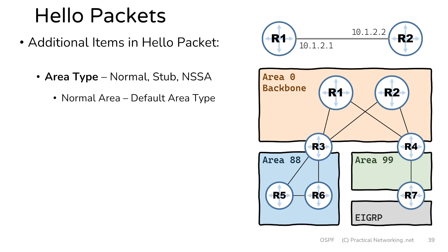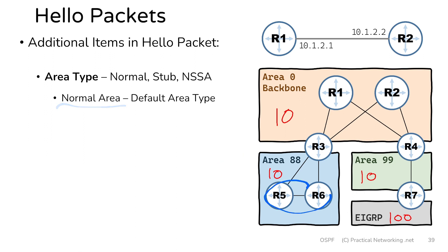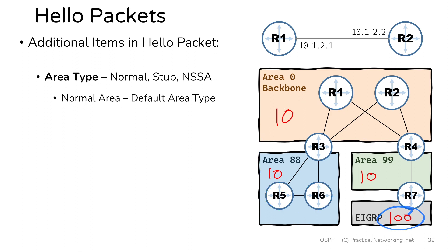Let's say area 0 has 10 routes, area 99 also has 10 routes, area 88 also has 10 routes, and the EIGRP topology happens to have 100 routes. These 100 routes are going to be redistributed by router 7 into our OSPF domain. Now if we left area 88 as the default area type, meaning a normal area, the routers inside area 88 are going to have the 30 routes from OSPF plus the 100 routes externally redistributed into OSPF, which means area 88 is going to have 130 routes.